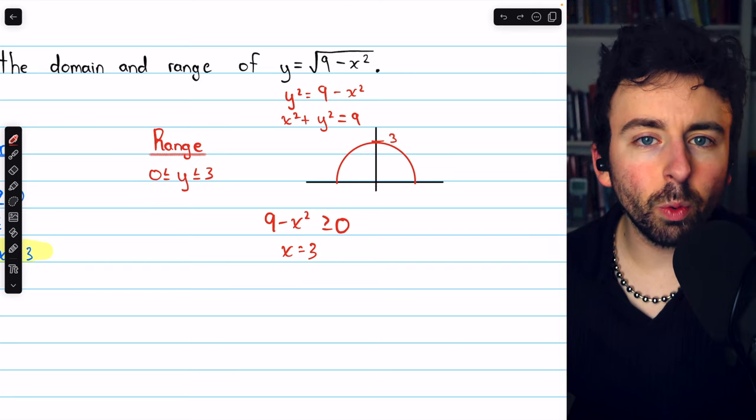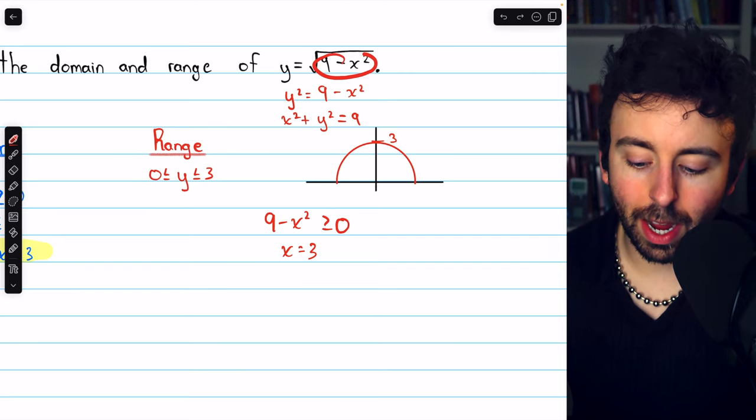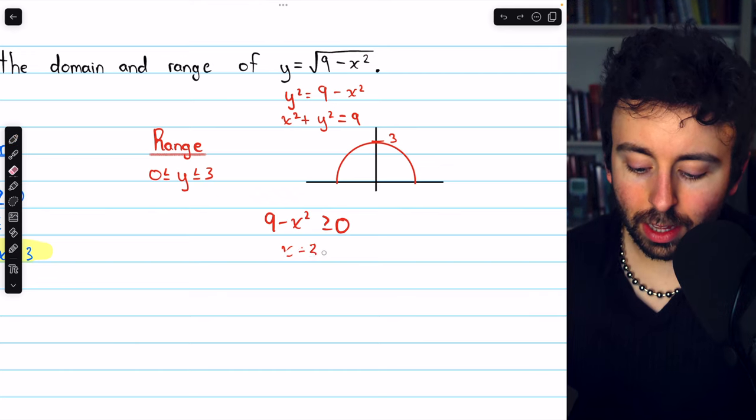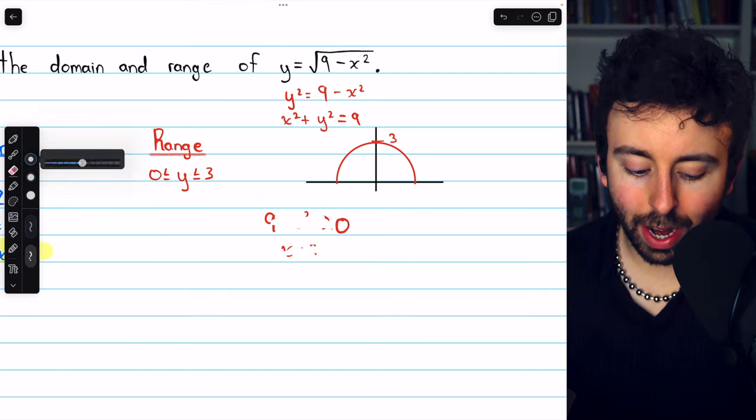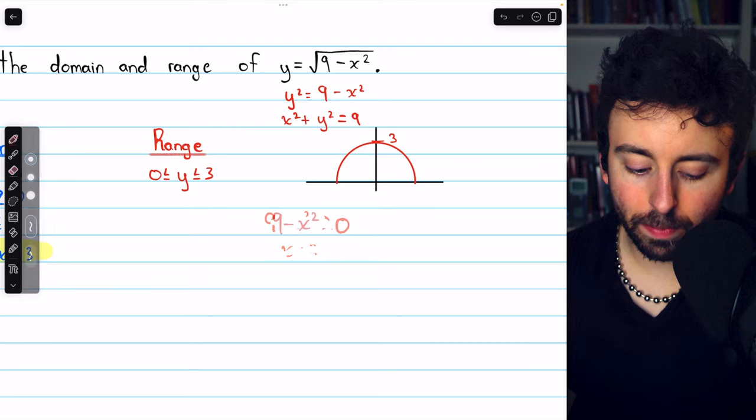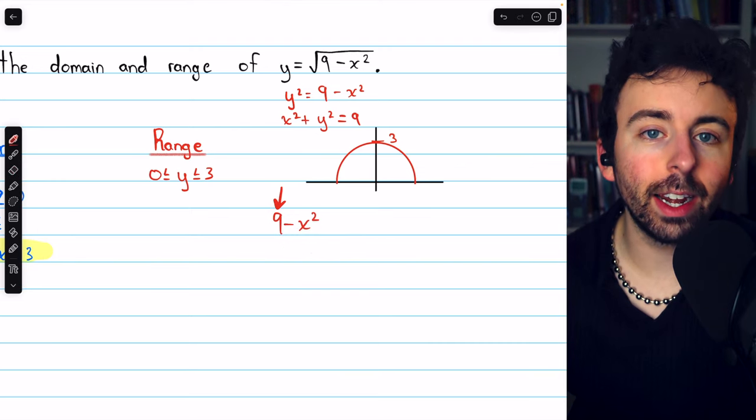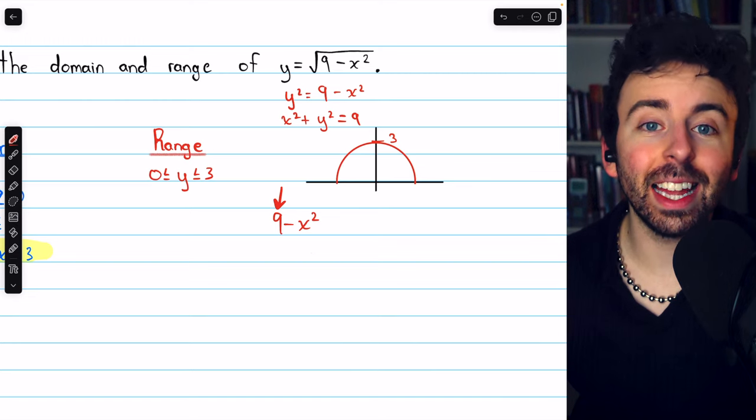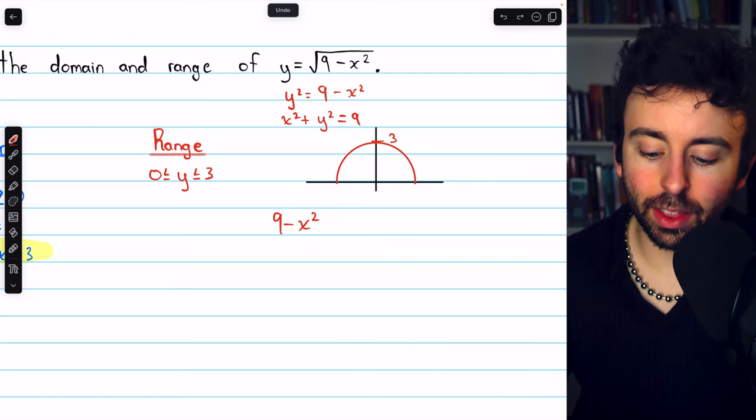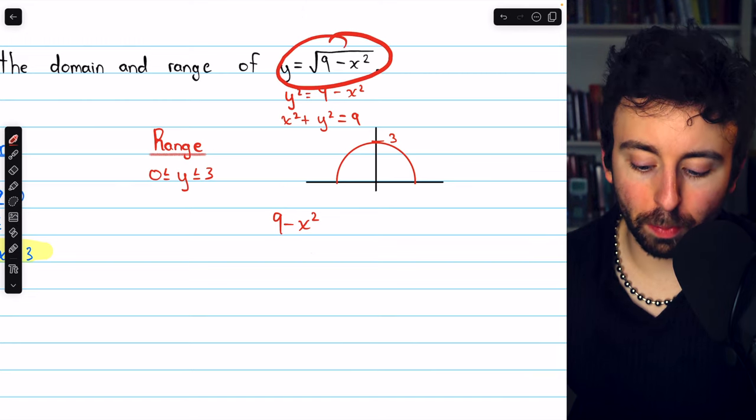We would then ask, what's the biggest 9 minus x squared can be? The biggest 9 minus x squared can be is when x is minimum. Again, since x squared is being subtracted from 9, the smaller x is, the less we're subtracting from 9, and thus the bigger the y value will be.